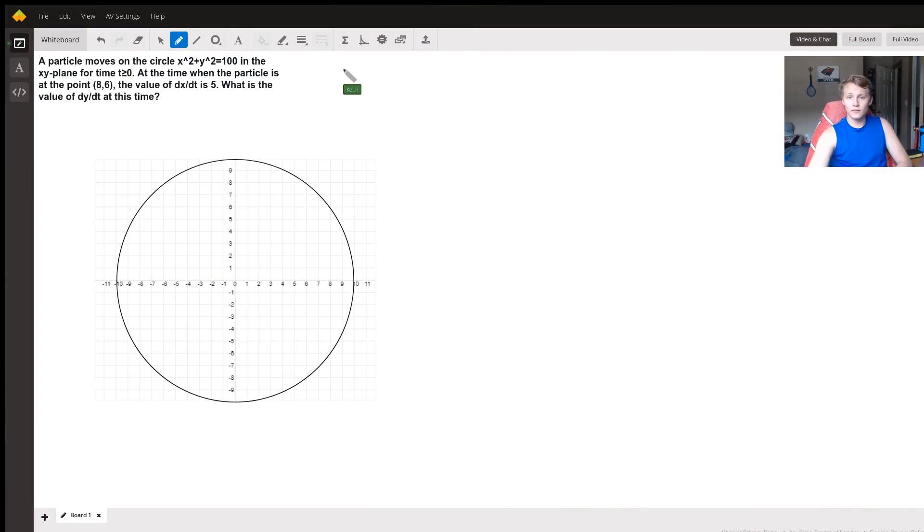Hi, so here we have a question about related rates. Given an equation of a circle, x squared plus y squared equals 100, or I'm going to write this as 10 squared, what is the value of the derivative dy/dt at the time when the particle is at the point (8, 6) when a particle is moving around a circle.